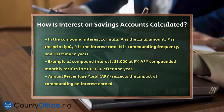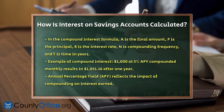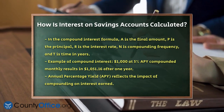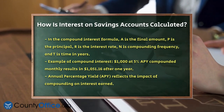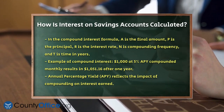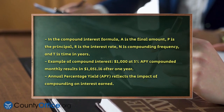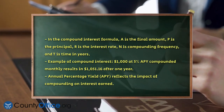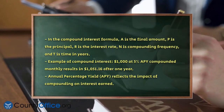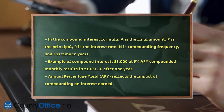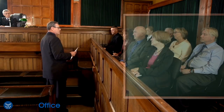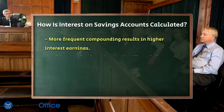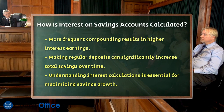Another important thing to note is the annual percentage yield, or APY, which includes the effect of compounding. APY tells you how much interest you'll earn over a year, taking into account the compounding frequency. For example, if an account has a 4% APY compounded daily, you'll earn more interest than if it were compounded annually, because the interest is added to your account more frequently.